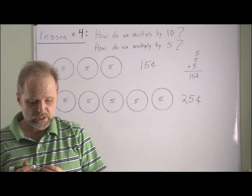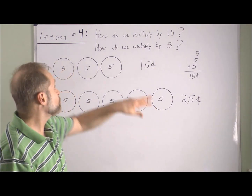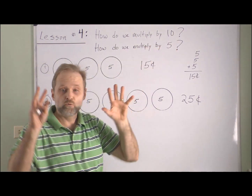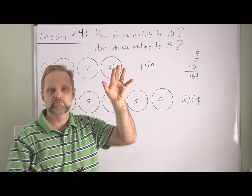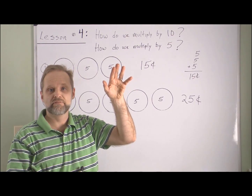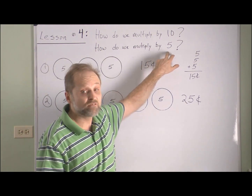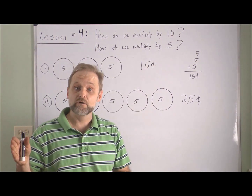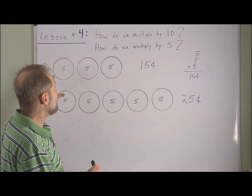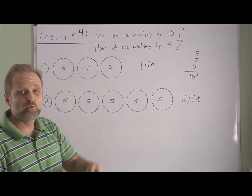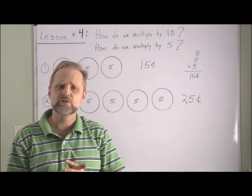Let's take a moment and recap. When we multiply by ten, we go to the number that's not ten and put a zero at the end — that's the easy way to multiply by ten. When we multiply by five, skip counting is going to be the great way to do that, and I think skip counting by fives is going to be one of the easiest skip countings you'll actually learn.